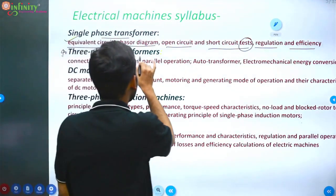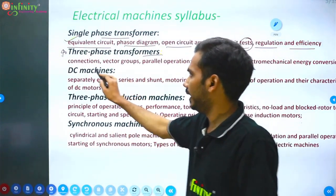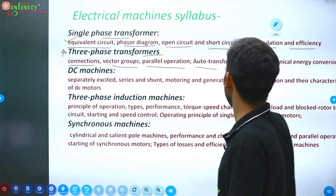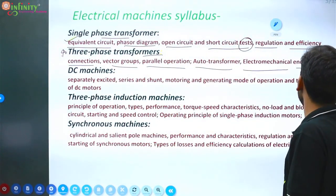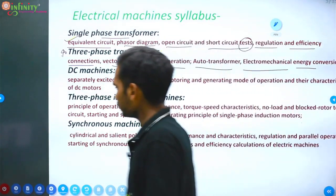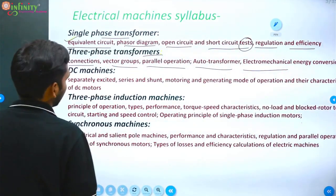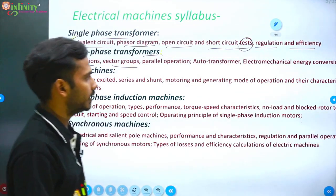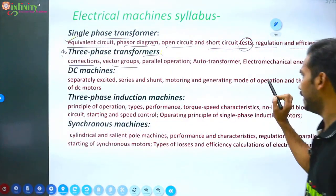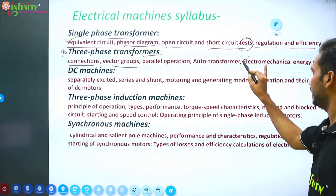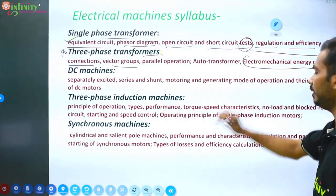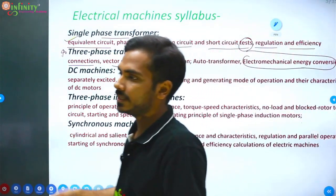Three-phase transformers include connections, vector groups, and parallel operations. Then there is the Auto Transformer and Electro Magnetic Energy Conversion — which deals with magnetic field, magnetic flux, and related parameters.